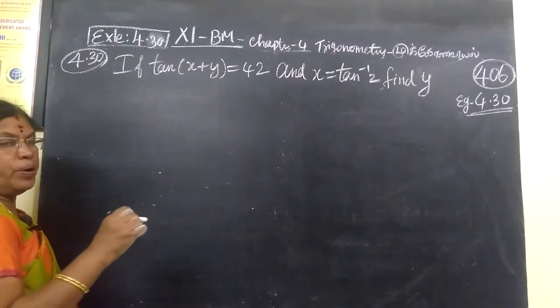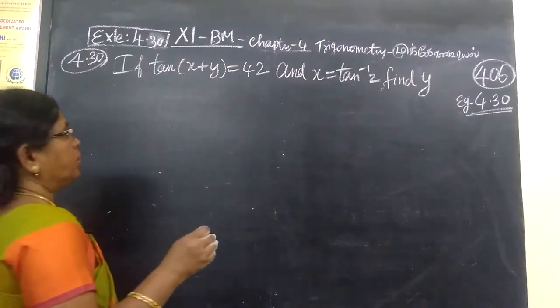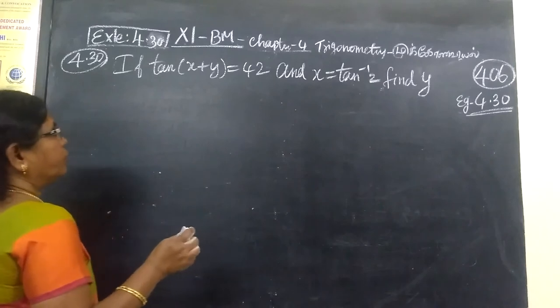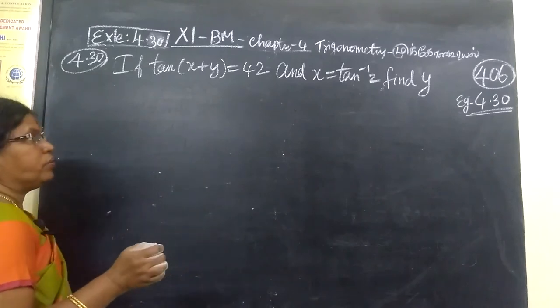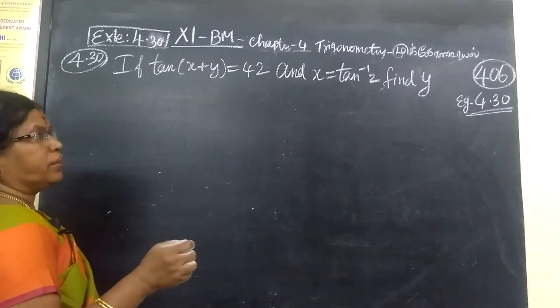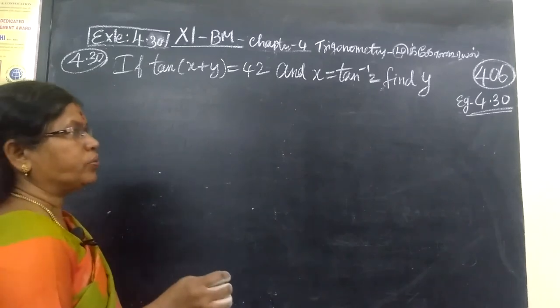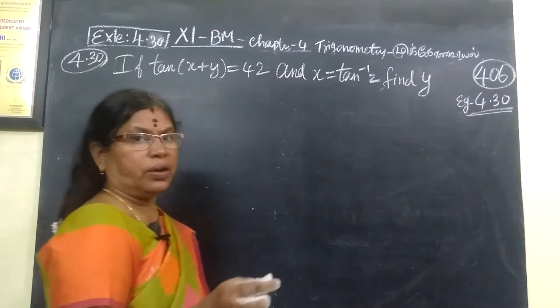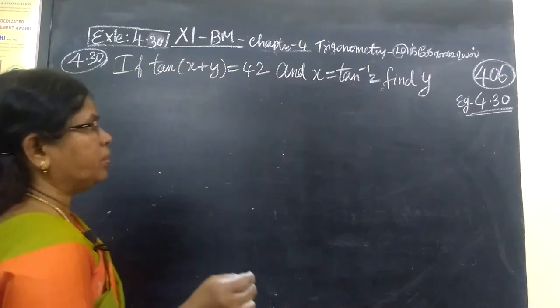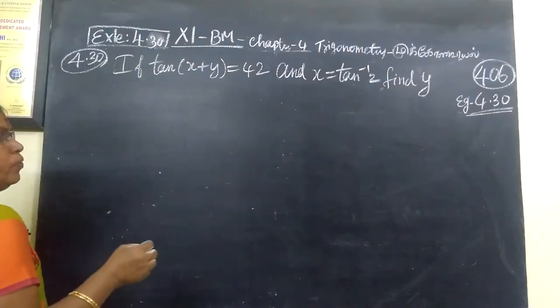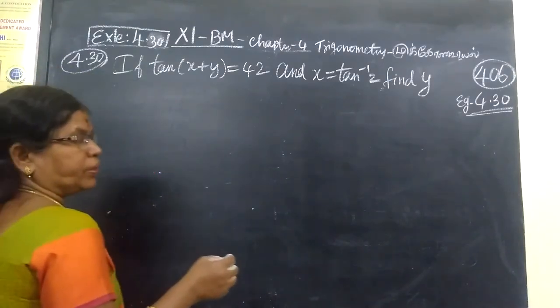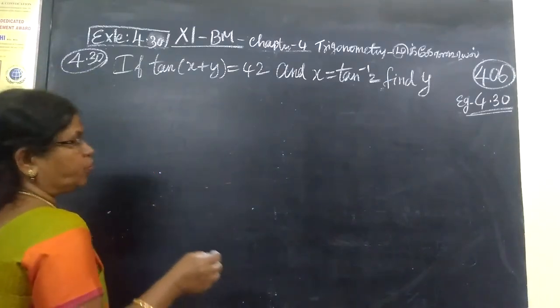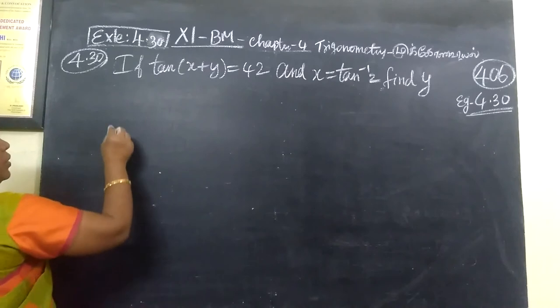This is the last problem in this exercise: tan(x + y) = 42 and x = tan⁻¹(2), find the value of y. This is from 12th Business Math, Chapter 4, Example 4.30.